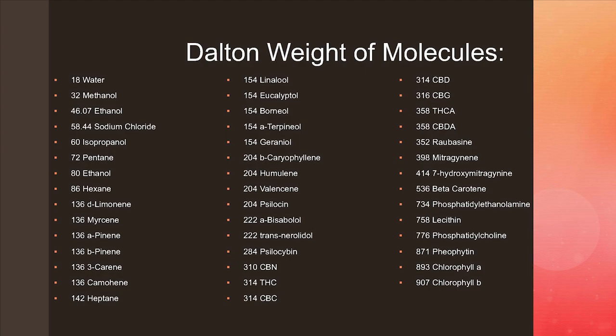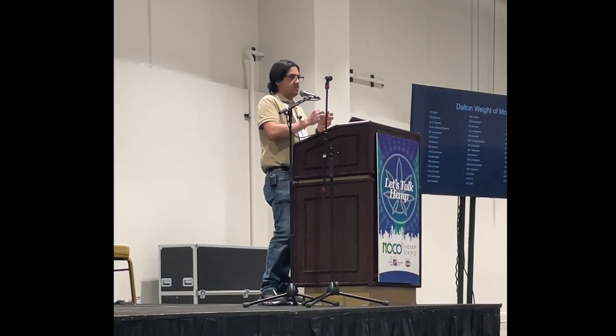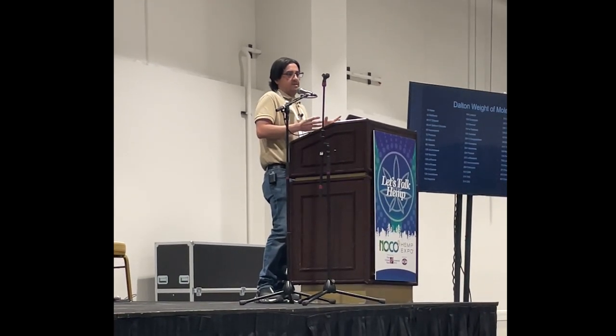If you look at the screen, this shows the delta weight of molecules that you can filter out. Generally, when there's enough separation between molecule sizes, you can separate them. For example, our cannabinoids are in the 300 dalton range, so you can separate ethanol, methanol, or those types of solvents from your cannabinoids. What you can't do is separate CBG from THC because they're almost the same size — this is a way to separate particles by size.